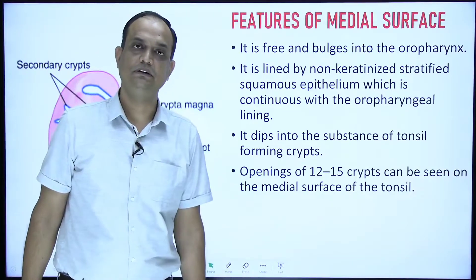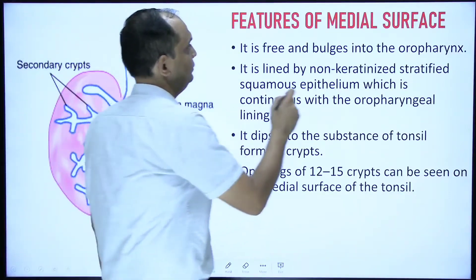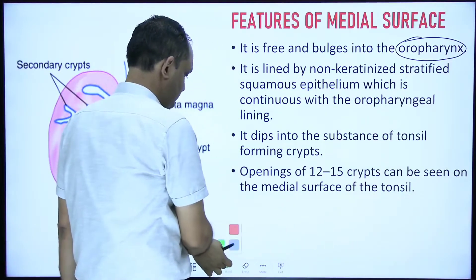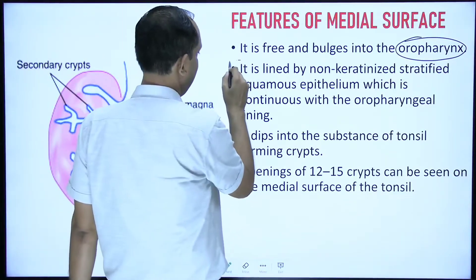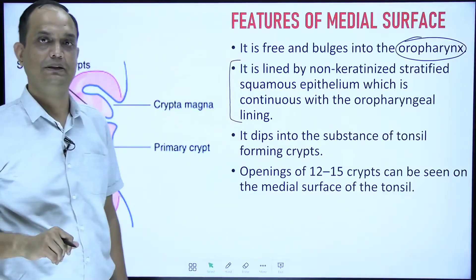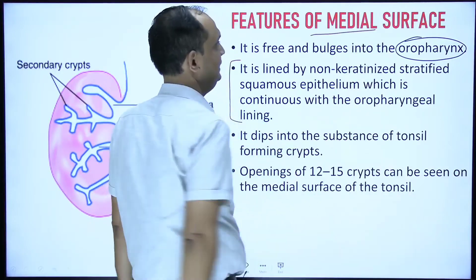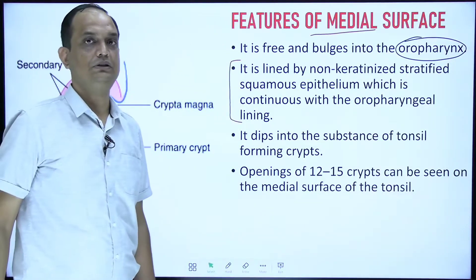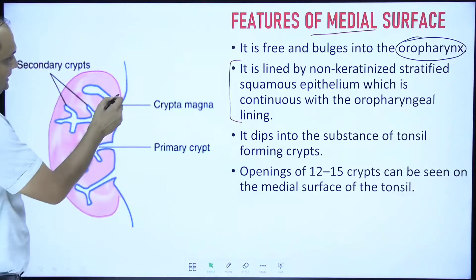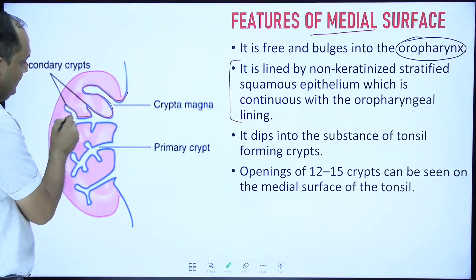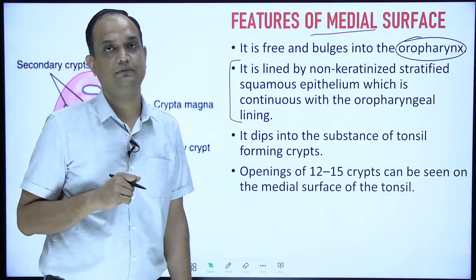The medial surface faces the oropharynx — not the oral cavity, which you must keep in mind. The oral cavity is lined by non-keratinized stratified squamous epithelium, and this epithelium continues in the oropharynx, lining the medial surface of the tonsil. On the medial side of the tonsil, there is an important feature known as the crypts of the tonsil — multiple invaginations from the medial side, also lined by non-keratinized stratified squamous epithelium.